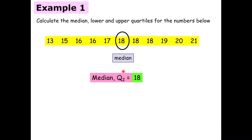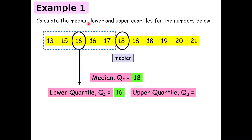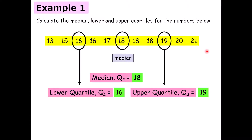Now we're going to find the lower and upper quartiles. For the lower quartile, Q1, we only focus on the bottom half of the numbers. We have five numbers there — an odd number — so the middle number is our quartile 1, which is 16. For the upper quartile, Q3, we find the median within the upper set of numbers, which gives us 19. Make sure you've got these copied down before we move on.